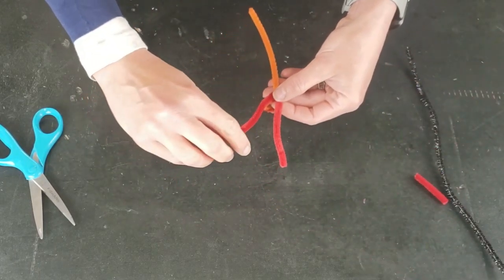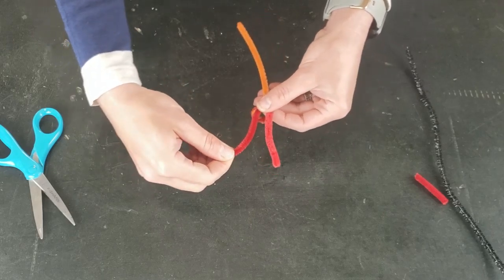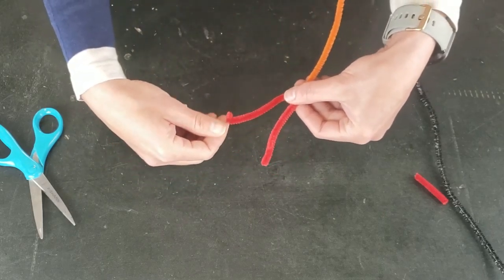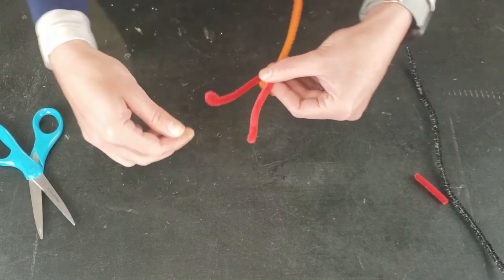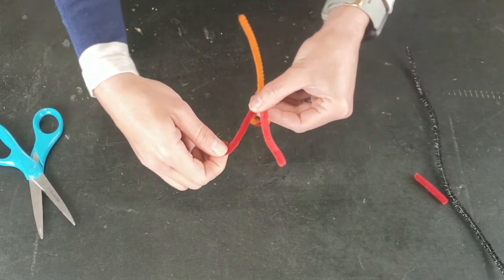And then I'm going to even these up here too, but you wouldn't normally need to cut the top ones because we want the top ones to be a little bit longer than the bottom ones. But if you didn't twist exactly in the middle, you can correct it at that point.